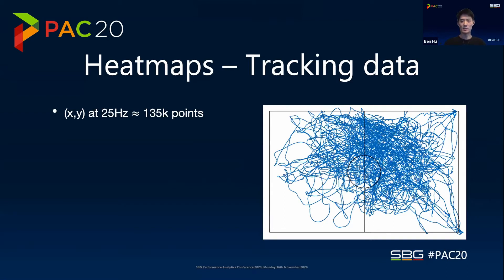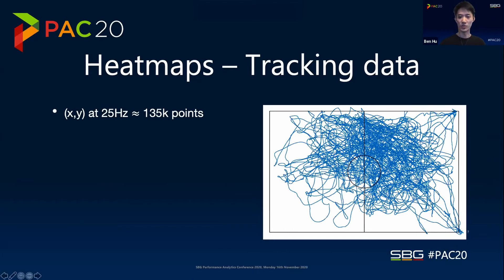Over the course of 90 minutes plus stoppage time, we'll end up with 155,000 data points. What we've got here is just a plot of that for a particular player in the match. And it's a bit of a mess. You can see individual runs and movements where he's gone, he's busy in this kind of area, and he's probably taken corners from both sides as well. But we need to polish this and make something useful out of it.